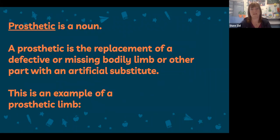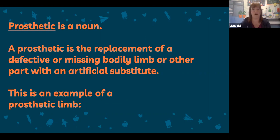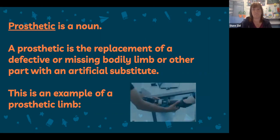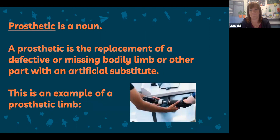'Prosthetic' is directly connected to the word 'artificial.' Prosthetic is a noun. A prosthetic is the replacement of a defective or missing bodily limb or other part with an artificial substitute. Here is an example of a prosthetic arm.